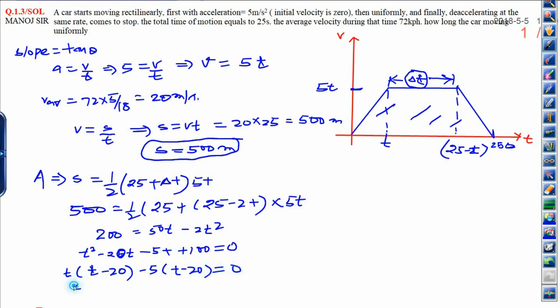So here we will get two values of time, t equals 20 seconds or t equals 5 seconds. But we need to calculate the time for uniform motion, that is delta t. How do you calculate delta t?